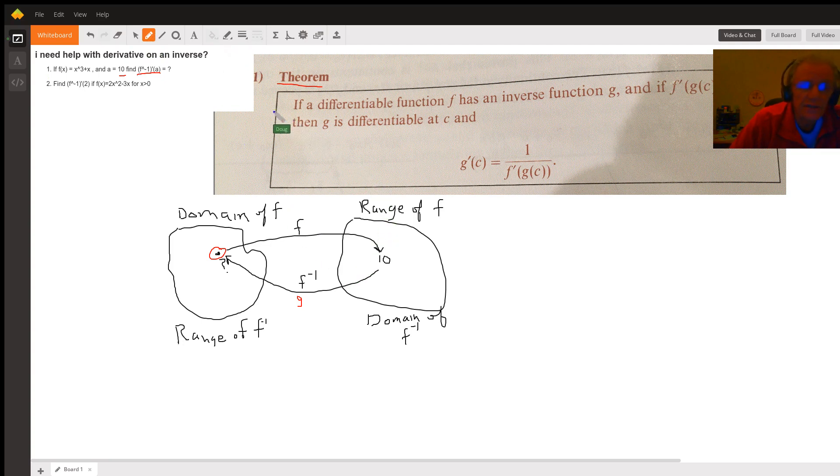The theorem we're going to be using is this one from a calculus book, Theorem 8.41. If a differentiable function has an inverse function g, and if f prime of g of c does not equal zero, then g is differentiable at c, and this is a formula for the slopes of tangent lines to the inverse function.